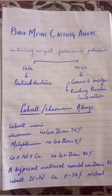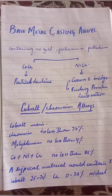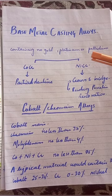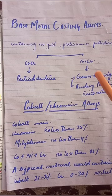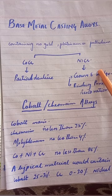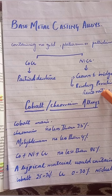Welcome to the YouTube channel Dental Materials. Today we are going to discuss chapter: Base Metal Casting Alloys. What is a base metal casting alloy? Basically, a type of metal which contains no gold, platinum, or palladium. This is called a base metal alloy. Base metal alloys are of two types: cobalt-chromium and nickel-chromium. Cobalt-chromium is used for partial dentures; nickel-chromium is used in crowns and bridges.